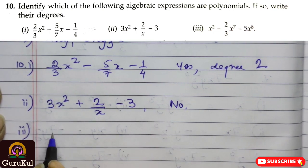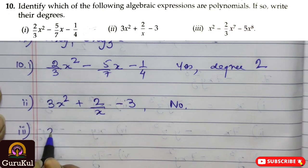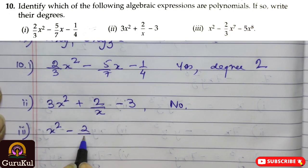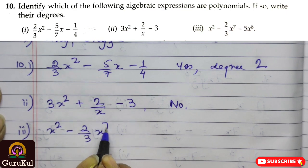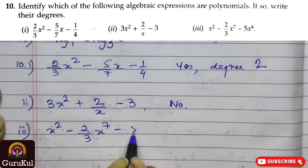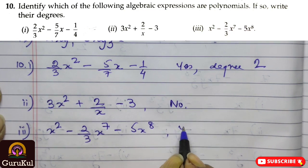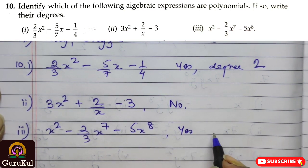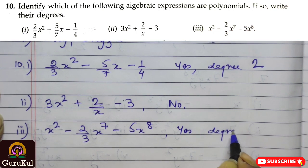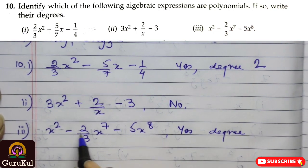Number 3, the expression is, x square minus 2 by 3, x to the power 7 minus 5x to the power 8. So, yes, this is polynomial, and the degree is 8, the highest.